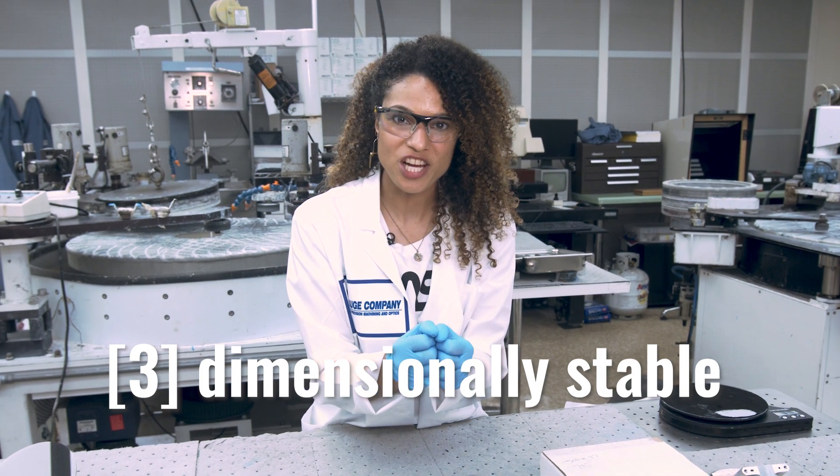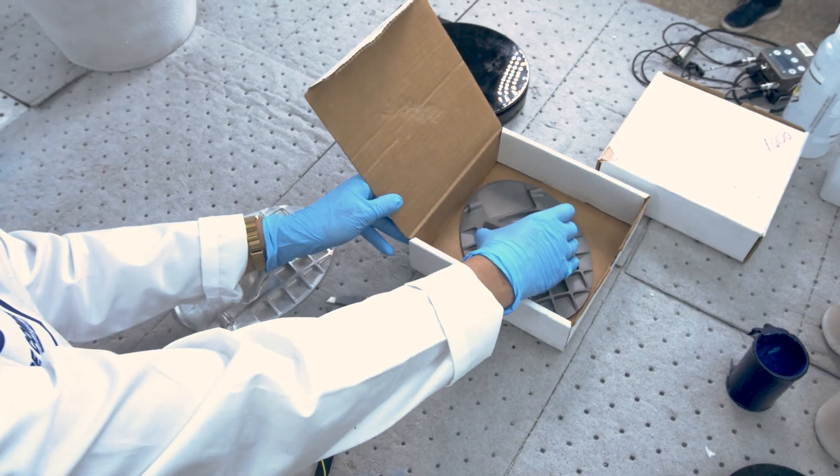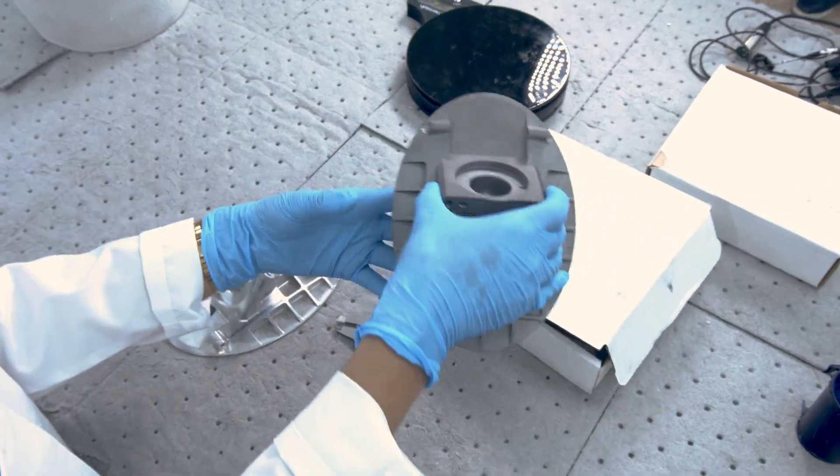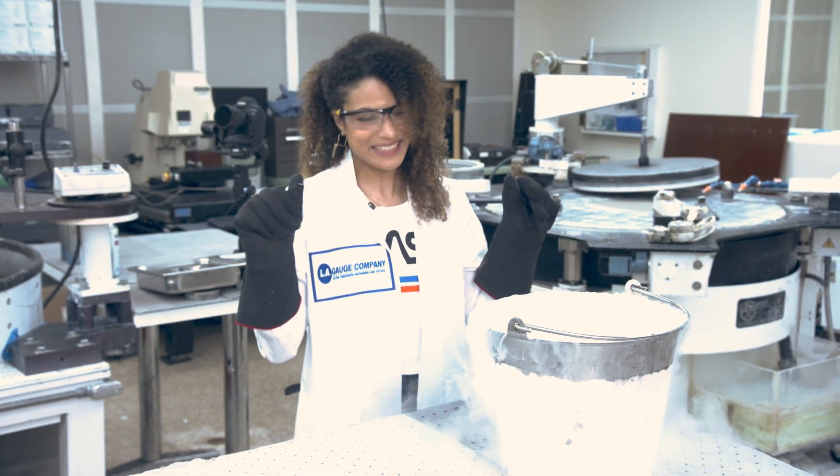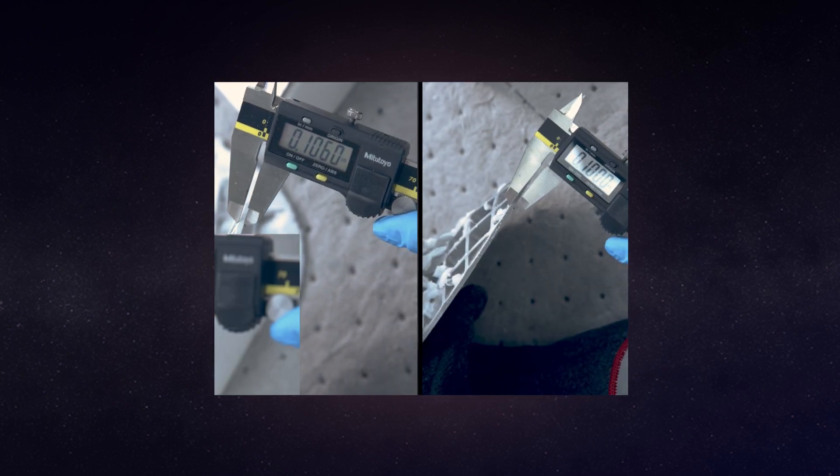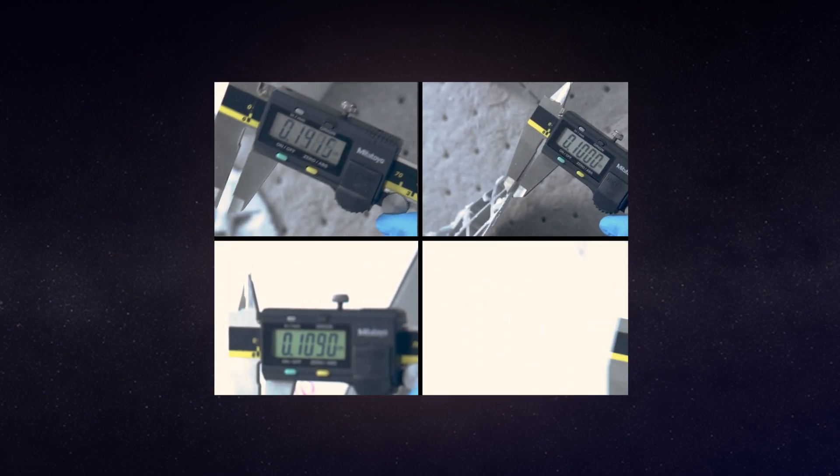So it can also hold its shape over a really broad range of temperatures, and that's especially important in the cold ones. I measured these identical aluminum and beryllium mirrors and then left them in some dry ice for a while. Science. I do have to admit that my measuring technique could use a little work, but the aluminum shrunk more than the beryllium.